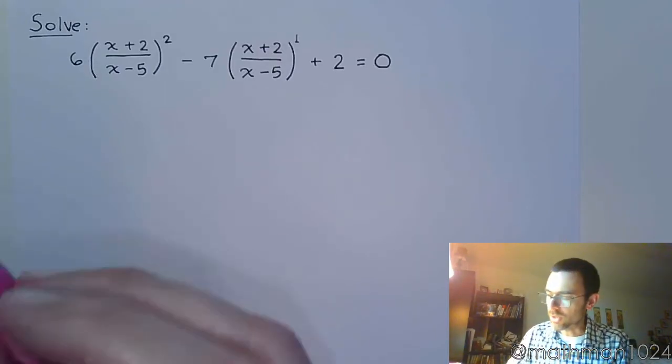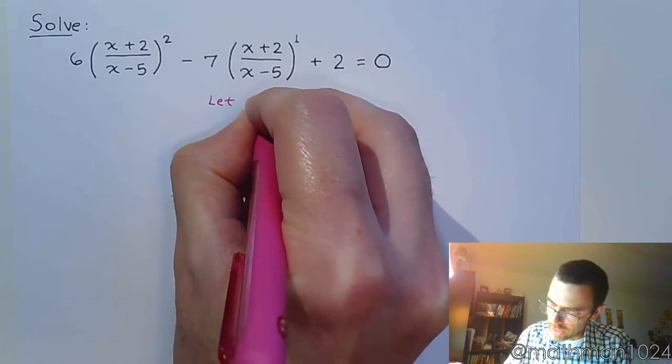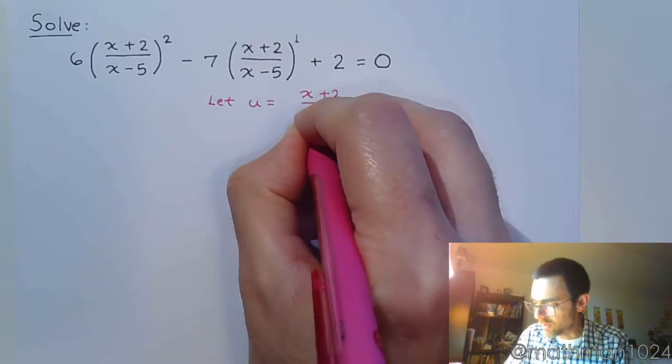And it also tells you how you want to make your substitution. You want to let u equal the complicated expression of the fraction, x plus 2 over x minus 5.